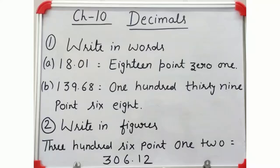So, decimal numbers are always written separately. Part b: 139.68. We will write it as 139.68. 139 is a whole number and decimal numbers are 6, 8.